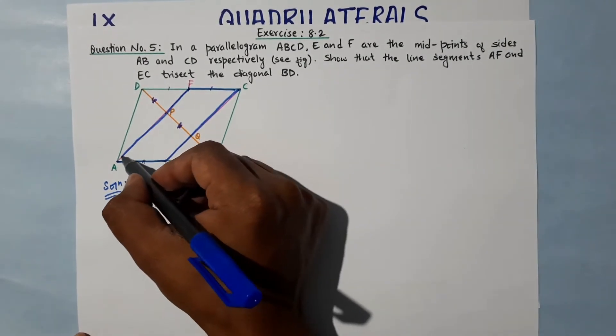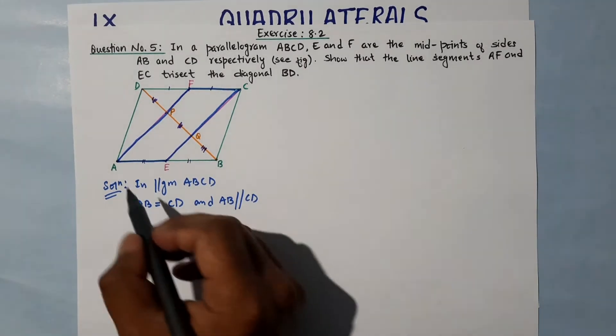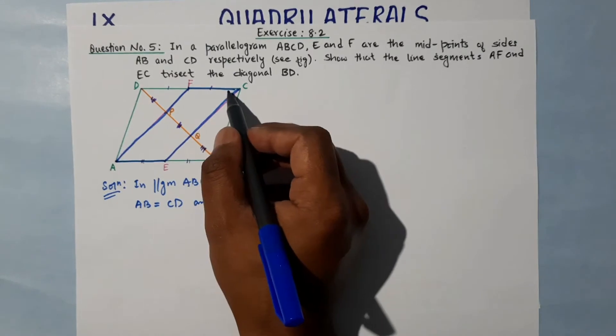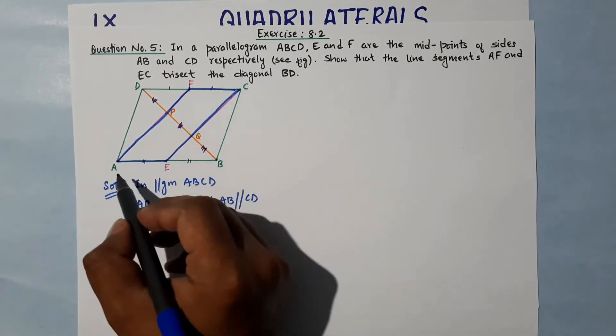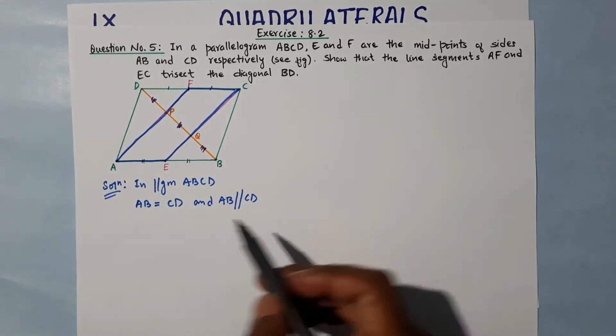...half of AB. So as we have to show AECF, AE and CF are equal or parallel. AECF, we have to show. E is a midpoint of AB, so we take half.